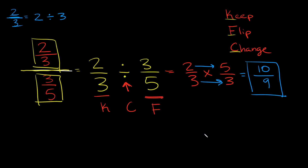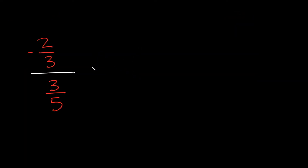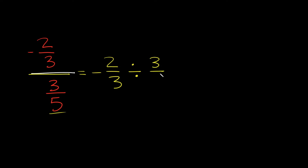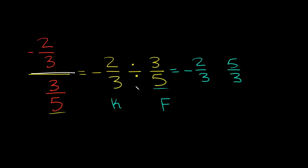Let's do two more examples and they're both gonna have negative numbers in them. Here we have negative 2/3 divided by positive 3/5. Our first step is rewriting this whole fraction into a normal division problem: negative 2/3 divided by 3/5. Now we apply the KFC method — keep negative 2/3 as negative 2/3, flip 3 over 5 to 5 over 3, and change the sign to multiplication.